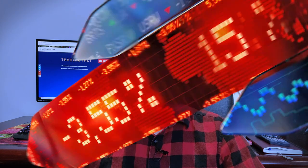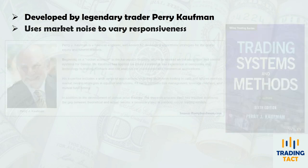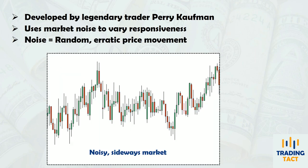I will explain how the KAMA is calculated, and how you can use it for trend following on the dollar franc. The KAMA was developed by Perry Kaufman in the 1970s. It varies its responsiveness in accordance with the market's noise level. Noise is the erratic price movement within a trend or consolidation period.